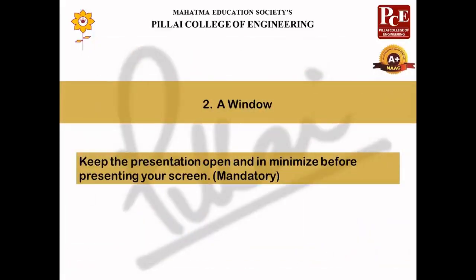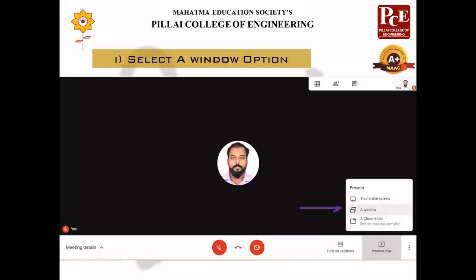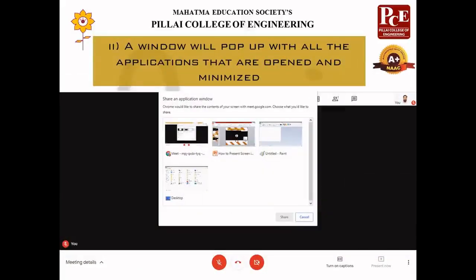Next, we will go over presenting a Window. This option is recommended if you want to present a single particular PowerPoint slide, a particular software, or any particular window. It is mandatory to keep the presentation or the window that you want to present open and minimized before presenting. Go to 'Present Now' and select the 'A Window' option. When you select a window, a pop-up will show all the windows currently open in your system.